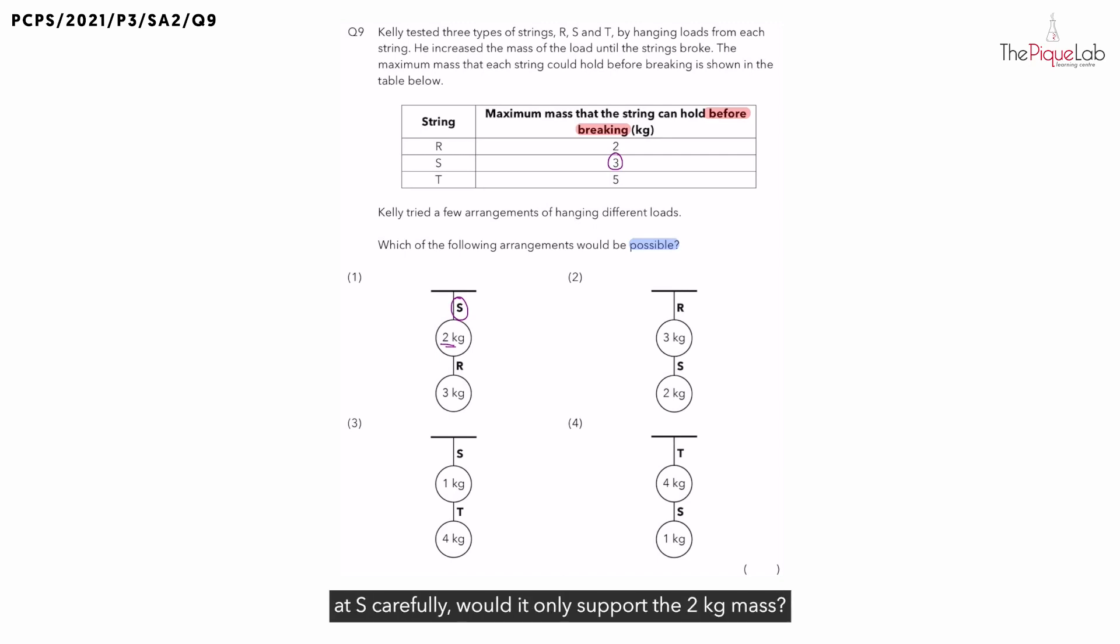But if you look at S carefully, would it only support the 2kg mass? No. In fact, string S is at the top, which means it will have to support not just the 2kg mass but all the loads below it. If you look at S, what's the total mass it needs to support? We have 2kg plus 3kg below. The total mass is 5kg. Since S can only support a maximum mass of 3kg without breaking, if S holds 5kg, string S would break, which means option 1 is not possible. So I'm going to cross this out.